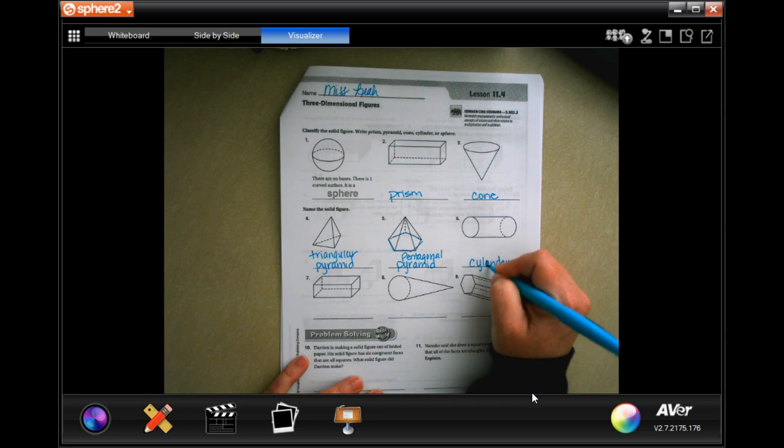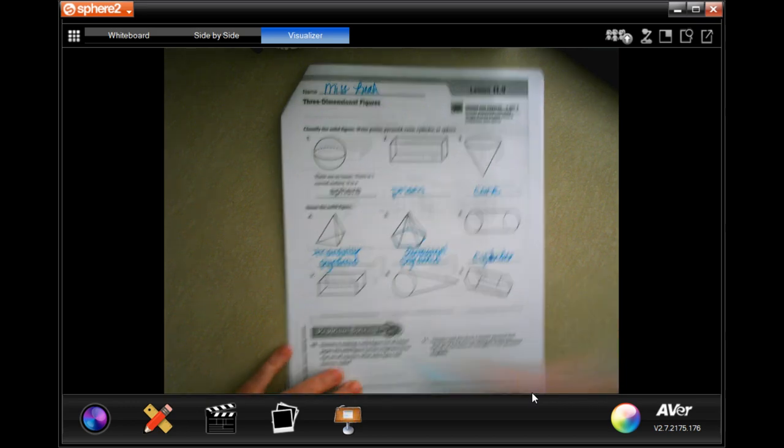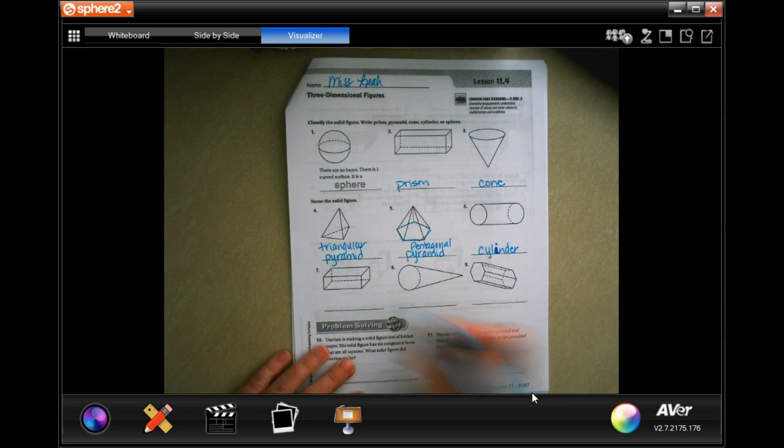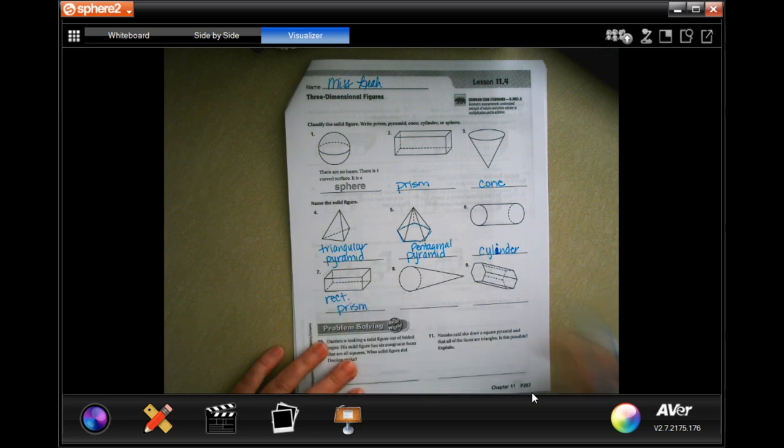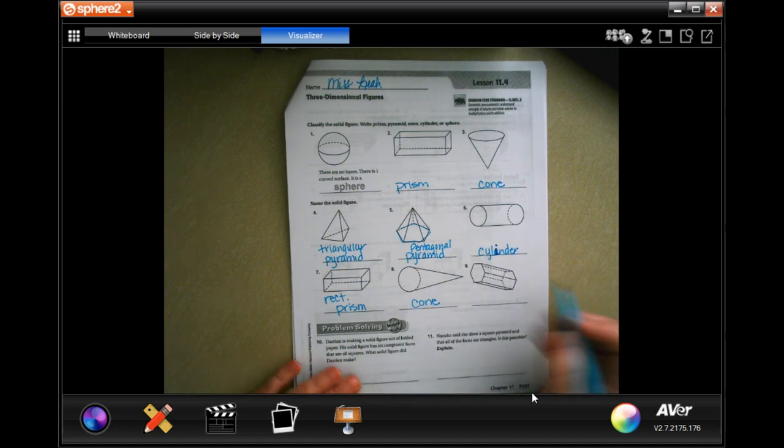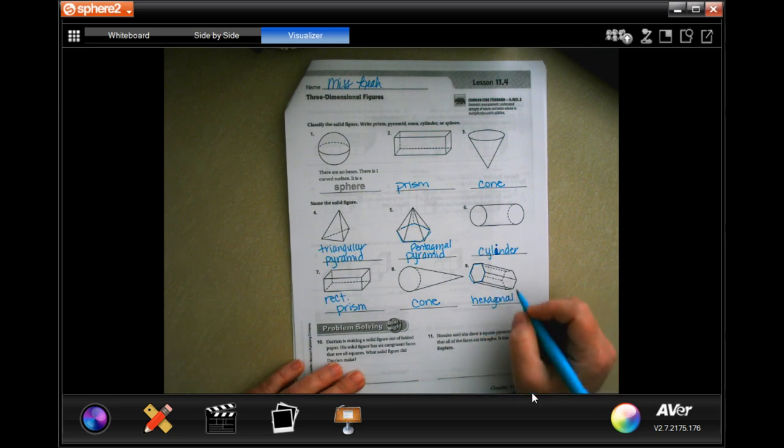I absolutely spelled that wrong, sorry guys, that's an I not an A. Again, just like that one, so it's a prism but it's a rectangle, so it is a rectangular prism. Okay, looks just like an ice cream cone. And this has one, two, three, four, five, six sides, making it a hexagonal prism.